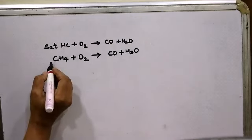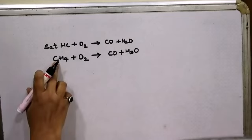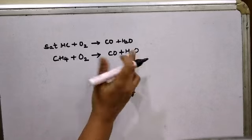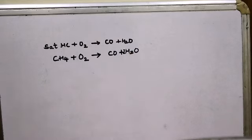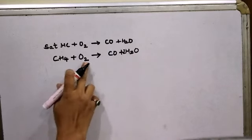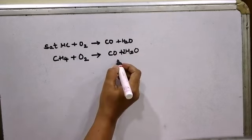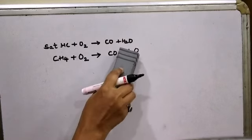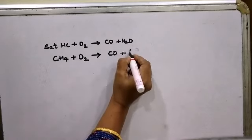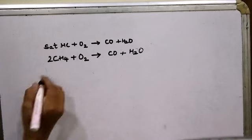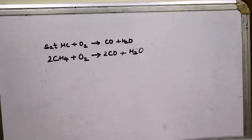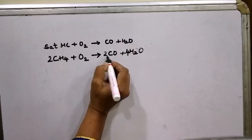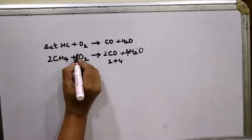If methane burns in insufficient supply of air or oxygen, the products are carbon monoxide plus water: CO plus H₂O. Balancing: one carbon on both sides. Hydrogen is four on the left, two on the right — putting two in front of H₂O gives four. Oxygen on the right: two plus one equals three, an odd number, so that coefficient is wrong. Putting two in front of CH₄ gives four carbon atoms; I put two in front of CO. Hydrogen becomes twelve — wait, two times four is eight, so four H₂O. Oxygen: two plus four equals six, so I put three O₂. The reaction is balanced. Similarly, ethane (C₂H₆) burns in insufficient supply of oxygen to form CO plus H₂O. Putting two in front of C₂H₆ gives four CO and six H₂O, with five O₂ on the left.